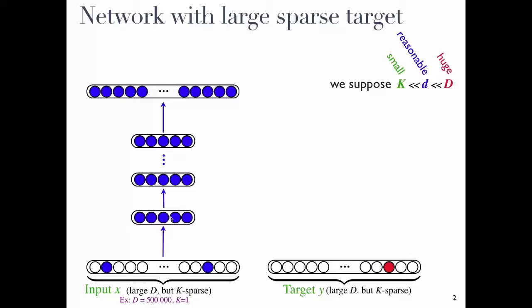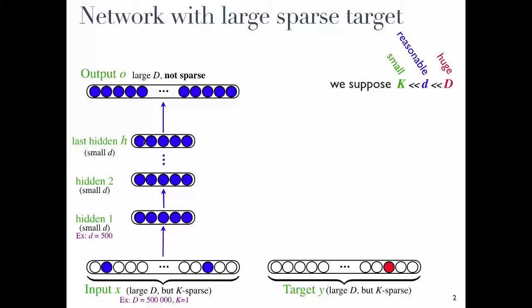To introduce the problem, let's consider a usual neural network of type MLP with some input that could be large and some target that we're going to suppose large but sparse. The input layer gets mapped to hidden units, and when we deal with large output spaces — extreme classification or language models — we typically have a very large output layer. If we're doing a language model, big D would be the size of the vocabulary.